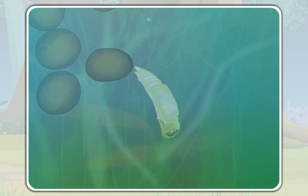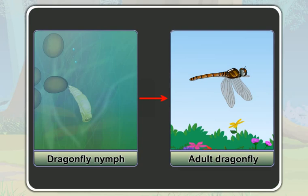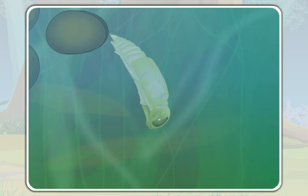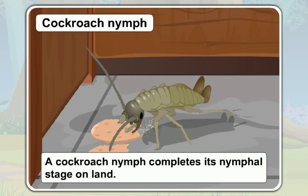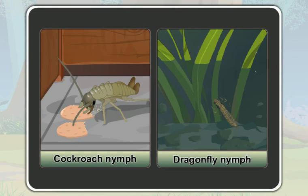This is a nymph of a dragonfly. A cockroach nymph completes its nymph stage on land. But unlike the cockroach nymph, a dragonfly nymph completes its nymph stage in water.